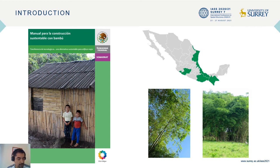In Mexico, the states of Veracruz, Chiapas, Oaxaca, Puebla, Tamaulipas, and Michoacan have become producers of bamboo, and its application has been mainly in low-cost construction and its high resistance against earthquakes.